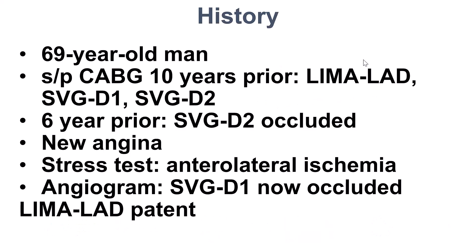The patient was a 69-year-old gentleman who had bypass surgery 10 years prior with LIMA-to-LAD, vein graft to the first and vein graft to the second diagonal branch. His vein graft to the second diagonal closed a few years back, but now he presented with new angina, anterolateral ischemia on the stress test, and new occlusion of the saphenous vein graft to the first diagonal.